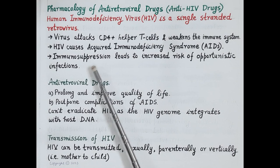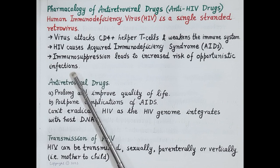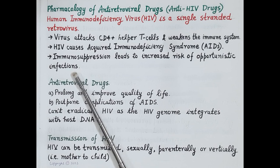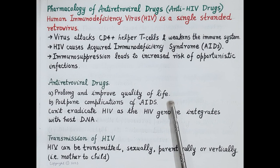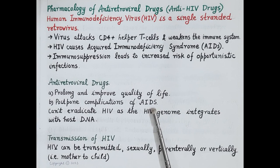Immunosuppression leads to increased risk of opportunistic infections like pneumonia, tuberculosis, fungal infections like candidiasis, and salmonella infections. Now antiretroviral drugs or anti-HIV drugs cannot cure AIDS, but they are useful in prolonging and improving the quality of life of the patient and they also postpone complications of AIDS.